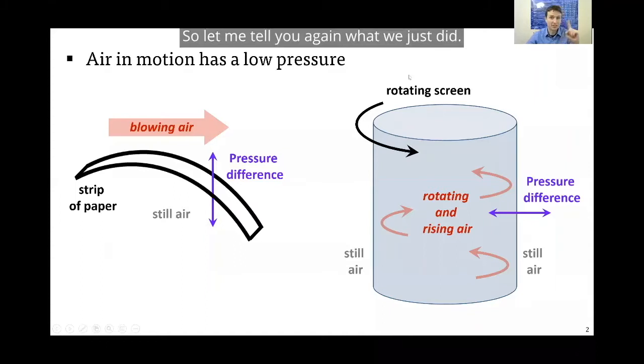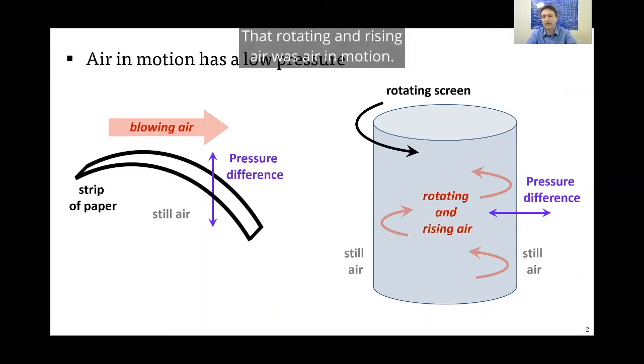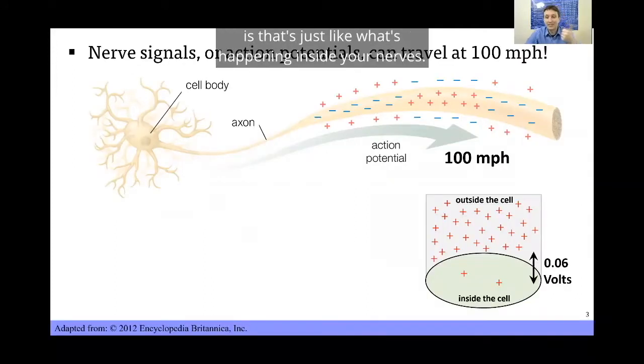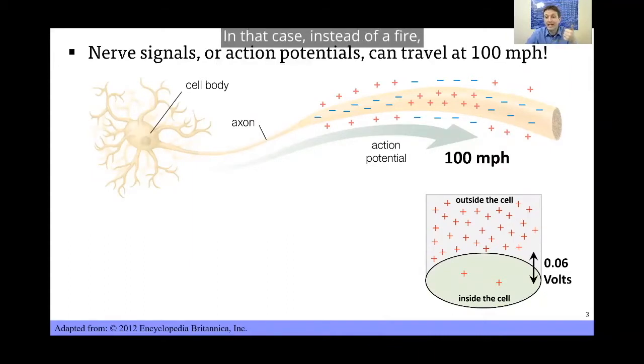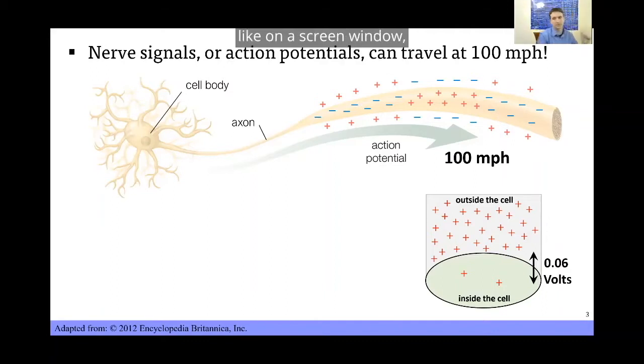So let me tell you again what we just did. We rotated that screen. The rotating air, also heated, created something like a helix inside the cylinder. That rotating and rising air was air in motion, which has low pressure. There's relatively still air outside. That pressure difference actually oxygenated the fire and created a fire tornado. What's cool about that is that's just like what's happening inside your nerves. In that case, instead of a fire, it's a little bit of a signal—could be from your vision, hearing, or from a neighboring cell that's starting a signal. And instead of moving down a wire mesh cylinder like on a screen window, it's moving down the length of the cell called an axon that carries these signals long range. That's called an action potential.